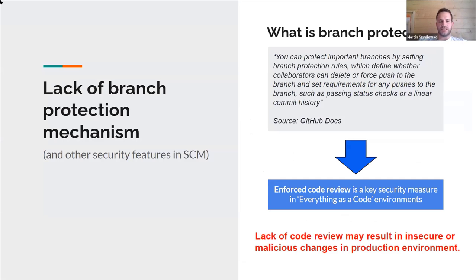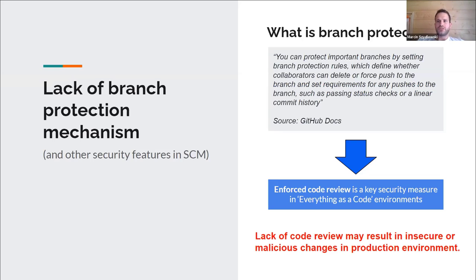The second group of problems is lack of branch protection mechanisms in your source code management tool. Branch protection is a mechanism that allows you to enforce certain rules in your SCM tool. One of the rules I totally recommend enforcing is that every pull request to your master branch — or any branch that triggers your pipeline — must be reviewed before it's merged. The reason is you want to make sure no single developer can introduce changes directly to the production environment in an uncontrolled way.